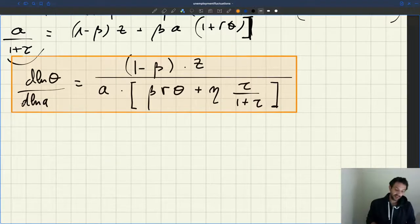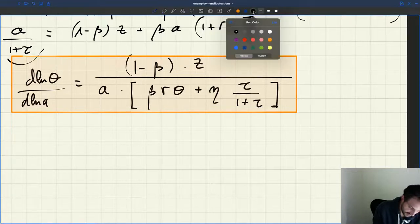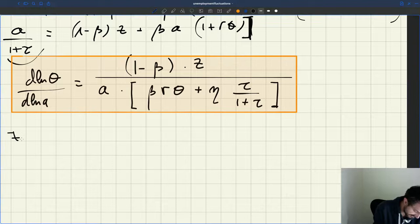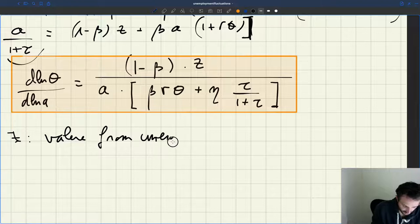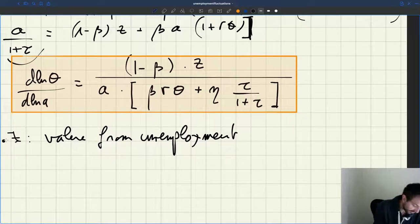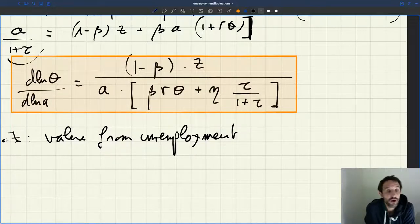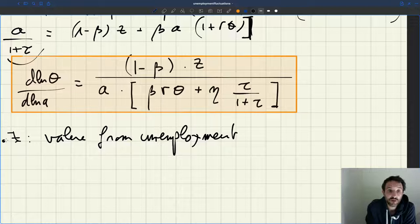What can we learn from that? The first thing that's really critical is Z, the value from unemployment. What we said is that it captures both positive and negative forces. What's positive about being unemployed is the fact that you have extra time for leisure, time for home production, and on the financial side you may be eligible for some government benefits.